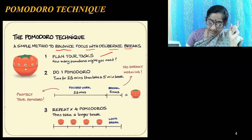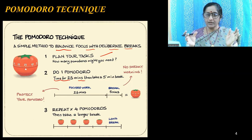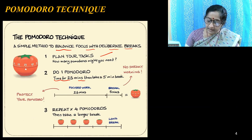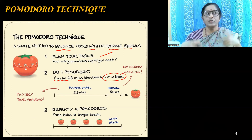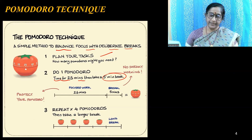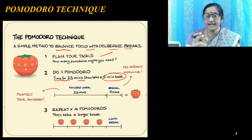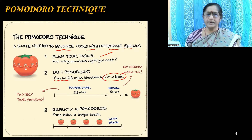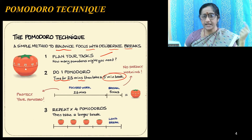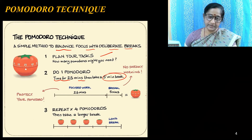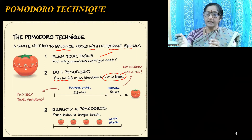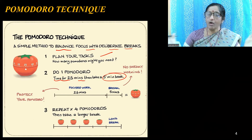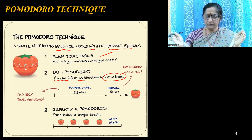Do one Pomodoro — that means 25 minutes of maximum attention paid towards a particular topic, followed by a five-minute break. If you want to solve biology questions, in 25 minutes you can solve nearly 60 to 75 questions depending on the question type. You can divide your time into four Pomodoros, after which you take a long break of one hour.